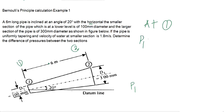So at section 1, P1 is not given. V1 is 1.8 meters per second. Then again, A1 is given.